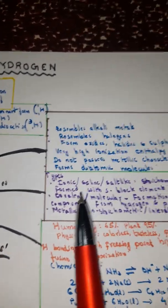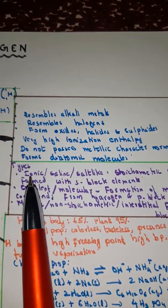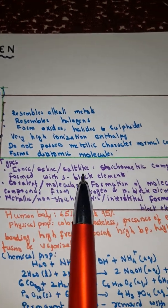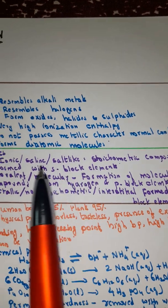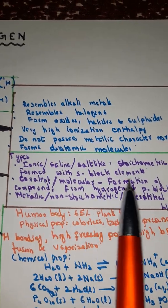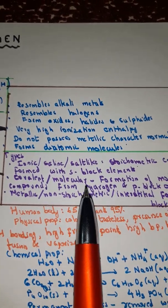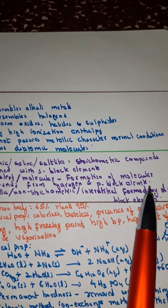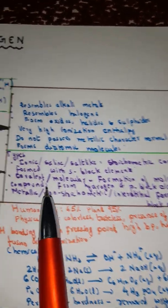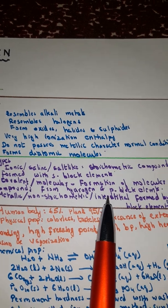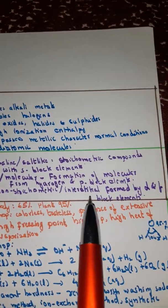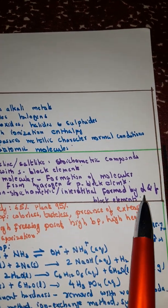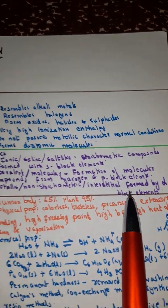Now next, the hydrides of hydrogen. The different types are: ionic, saline, salt-like stoichiometric compounds formed with S-block elements; covalent molecular compounds from hydrogen and P-block elements; and metallic, non-stoichiometric interstitial hydrides formed by D and F-block elements.